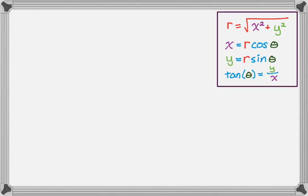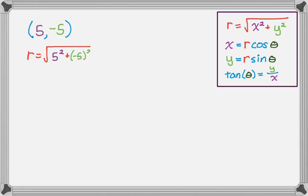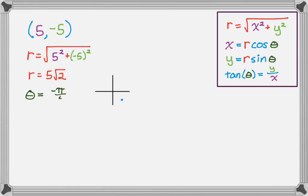Let's see how we use them — I'll put those in the corner. Say I want to convert the rectangular ordered pair (5, -5). First, I'll calculate R: square root of 5 squared plus (-5) squared, which works out to 5 root 2. Now I need to figure out theta. In this case, it cuts the fourth quadrant in half — move over 5, down 5 — so theta is negative pi over 4.